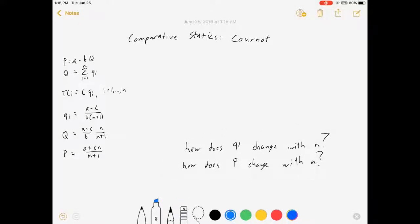So let me introduce you to the model so far. Demand curve. There's quantity Q, the sum of all the individual quantities. There's N firms. They all have symmetric cost.